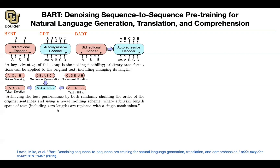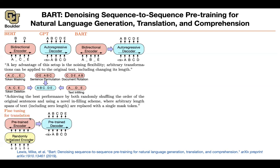You can actually achieve the best performance by random shuffling — that is, sentence permutation — combined with text infilling. Now, let's say you wanted to fine-tune it. This was the pre-training stage. For fine-tuning, let's say you want to do translation. You have the encoder — it is pre-trained. You have a decoder — it is pre-trained.